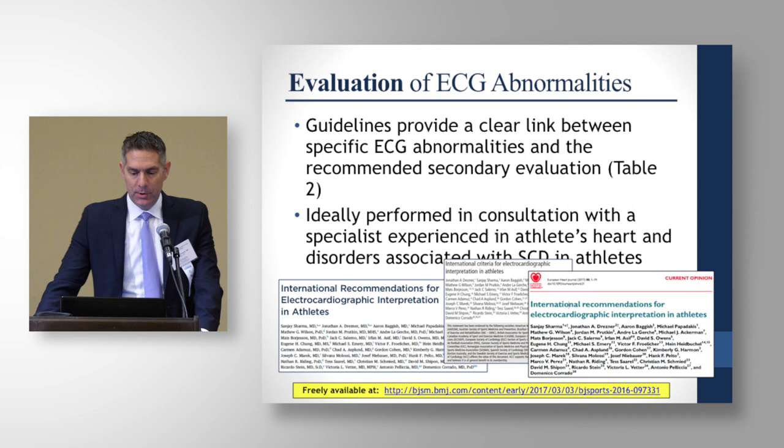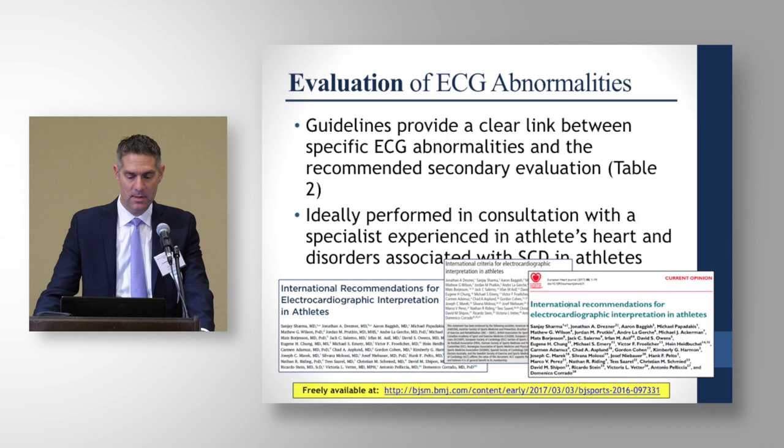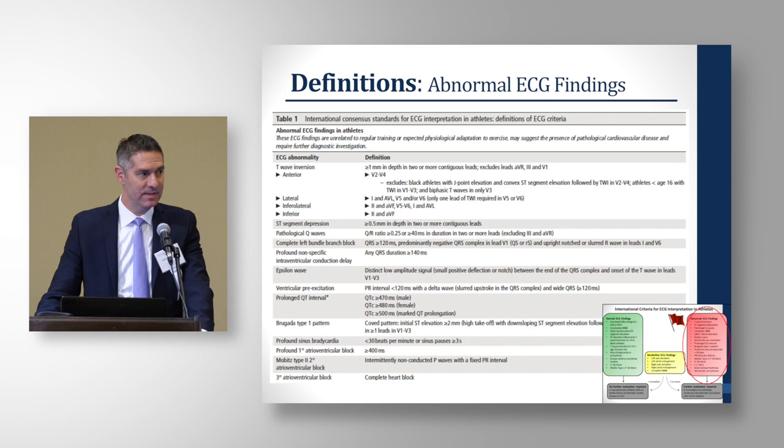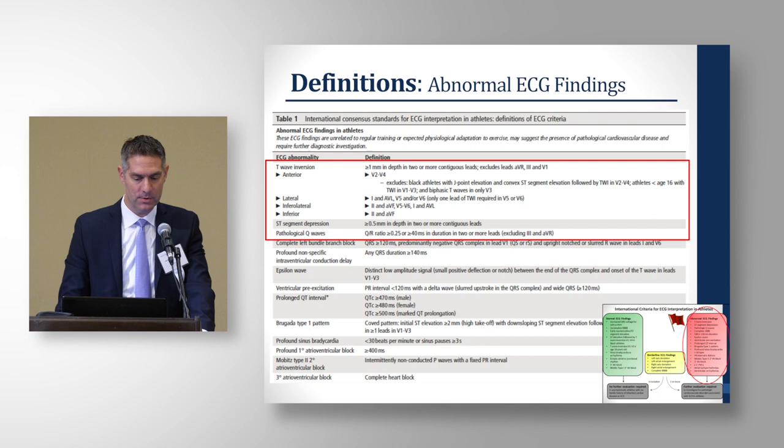The new recommendations clearly talk more about secondary testing and link the ECG abnormality to the specific evaluation recommended. That evaluation is ideally performed in consultation with a specialist who has experience distinguishing athlete's heart from disorders associated with sudden cardiac death. It's super important to understand the precise definition of what we're calling abnormal on those ECGs — from Table 1 of the international criteria. Today we're going to focus mostly on T-wave inversion, ST-segment depression, pathologic Q-waves, and a little bit on pre-excitation, while other sessions cover the rest.